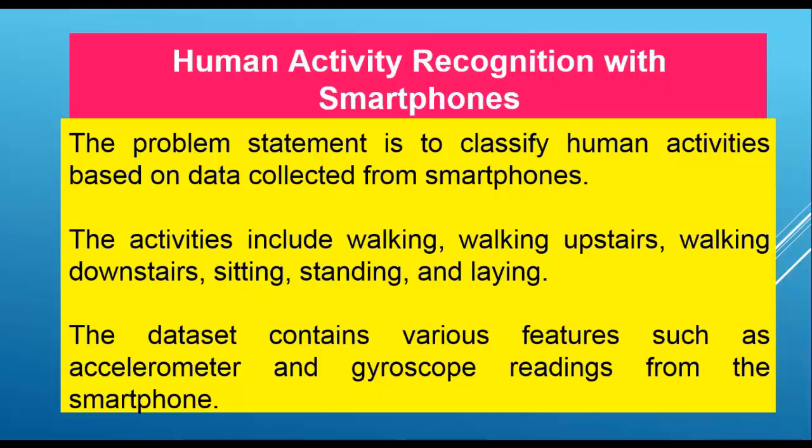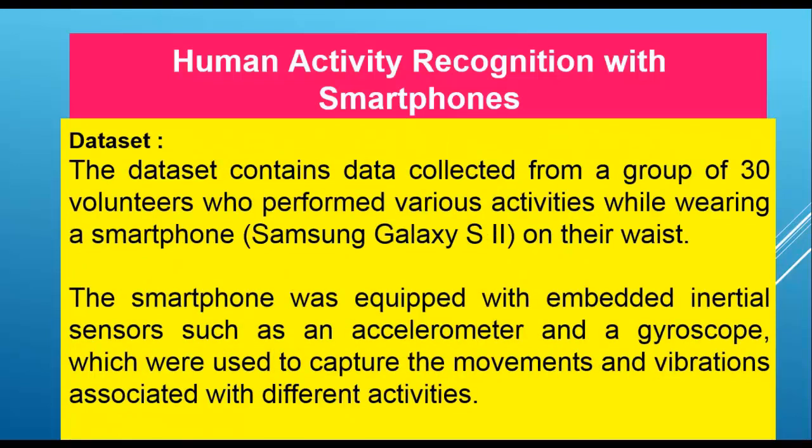The dataset contains various features such as accelerometer and gyroscope readings from the smartphone. The dataset contains data collected from a group of 30 volunteers who performed various activities while wearing a Samsung Galaxy S2 on their waist. The smartphone was equipped with embedded inertial sensors — an accelerometer and a gyroscope — used to capture movements and vibrations associated with different activities.